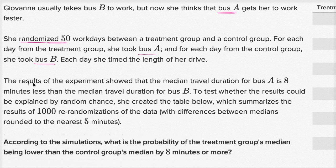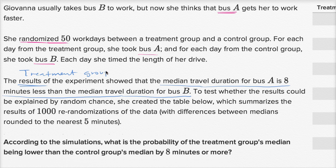So then they tell us, the results of the experiment show that the median travel duration for bus A is eight minutes less than the median travel duration for bus B. Or one way to think about it, if we said the treatment group median minus the control group median, what would we get? Well, the treatment group is eight minutes less than the control group. This is A, this is B. So if this is eight less than this, then this is going to be equal to negative eight. This is just another way of restating what I have underlined right over here.